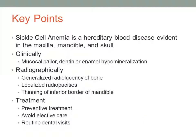To summarize, sickle cell anemia is a hereditary blood disorder which manifests itself not only in blood vessels but in the bones of patients. When examining a patient, physicians may see mucosal pallor, dentin or enamel hypomineralization, or radiographically may see a generalized radiolucency of the bone, localized radiopacities, or thinning of the inferior border of the mandible. When treating a patient with sickle cell anemia, it would be wise to encourage preventative care through methods such as fluoride treatment, avoid elective care if possible, and encourage routine dental visits.